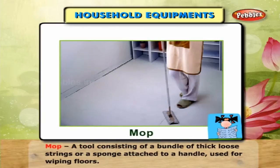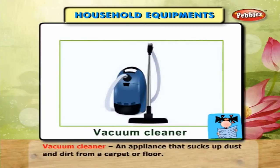Mop — a tool consisting of a bundle of thick loose strings or a sponge attached to a handle, used for wiping floors. Vacuum cleaner — an appliance that sucks up dust and dirt from a carpet or floor.